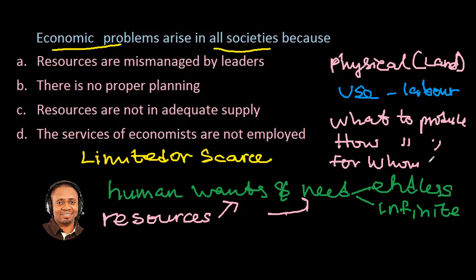Let's now go back to the question which says: Economic problems arise in all societies because of — Option A: Resources are mismanaged by leaders. Not at all — resources are limited or scarce, so this option is wrong. Option B: There is no proper planning. We're not talking about proper planning; that is not a basic or fundamental economic problem common in all societies.